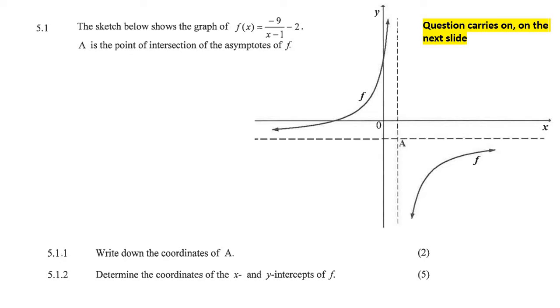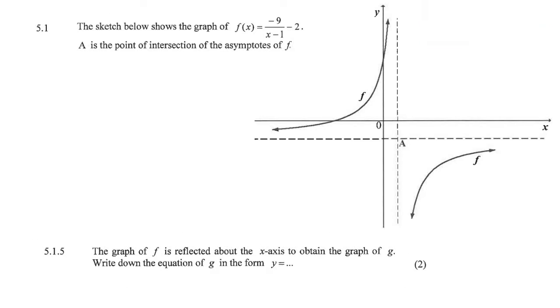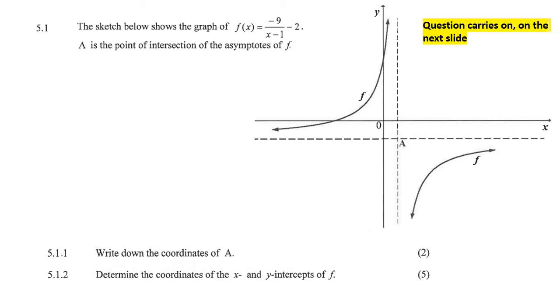Please note that these questions do carry on. So here's point one and point two, point three and point four, and then point five. All right, so the sketch below shows the graph of this hyperbola. A is the point of intersection of the asymptotes of it.